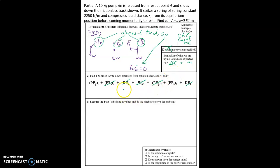So this is going to simplify things greatly and we're going to go ahead on to our executing our plan. So we have mghi equals one half k delta x f squared.